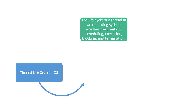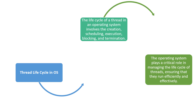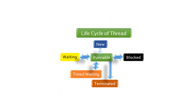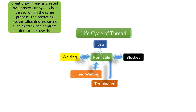Now we can move to the life cycle of threads in OS. The life cycle involves creation, scheduling, execution, blocking, and termination. The OS plays a critical role in managing this life cycle, ensuring threads run efficiently and effectively. In the creation stage, a thread is created by a process or by another thread within the same process, and the OS allocates resources such as stack and program counter for the new thread.